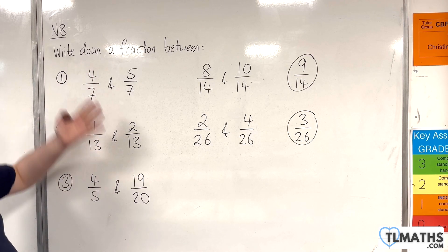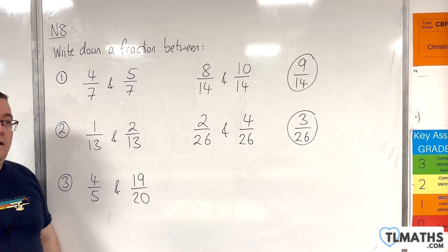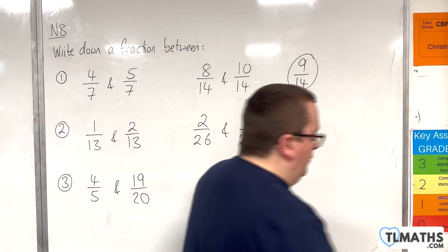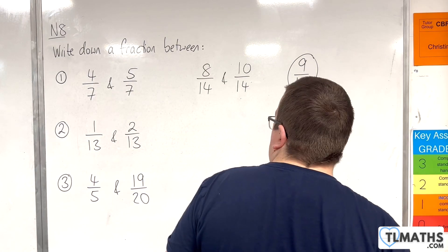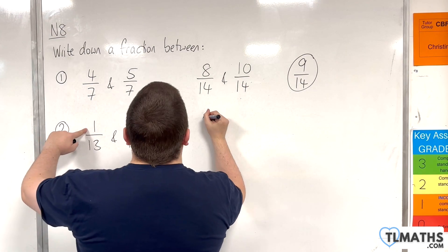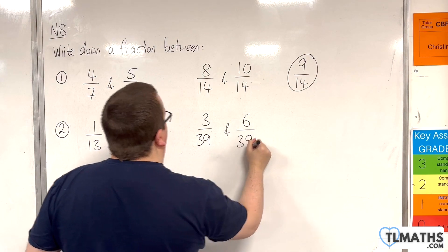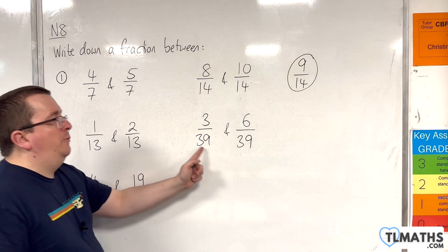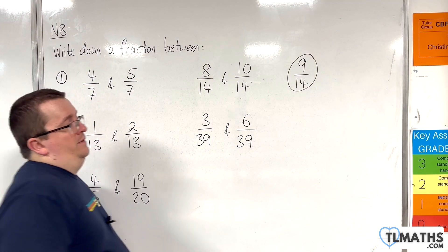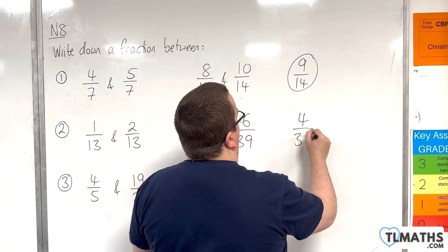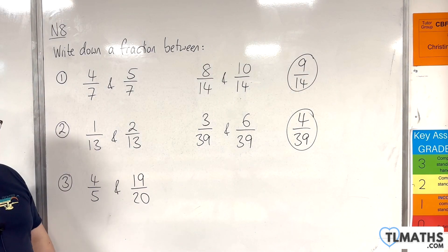Now, in both those cases, I've multiplied top and bottom by 2. I could have done the same with 3 — that would have been perfectly fine. So, if I'd multiplied top and bottom of the second example by 3, we would have 3 over 39 and 6 over 39. So, a fraction that is between those two would be 4 over 39 or 5 over 39. Either of those would be perfectly fine, and there you have a fraction that is between 1 over 13 and 2 over 13.